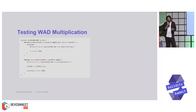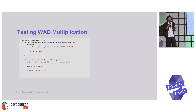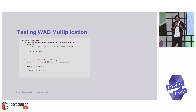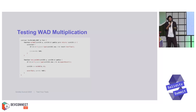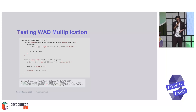Another example is testing wad multiplication. We have a mulWad function which multiplies two uint values, and because it's in wad units we have to normalize again at the end. We have a check for overflow since we're using unchecked arithmetic. We write a test: check for overflow, if we expect it we try to catch it, otherwise we assert we get the right value. We run the fuzzer and get a passing result.